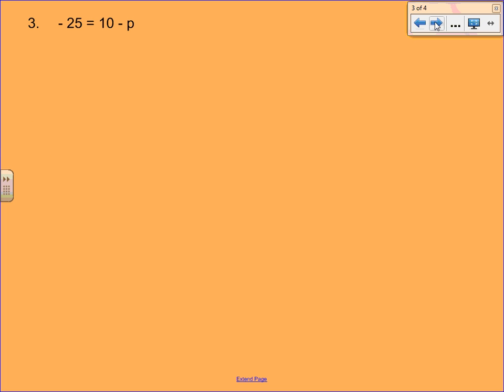Our next example looks a little different because the variable is on the right-hand side. Not a big deal. We start off the same way. We want to look at what is being added or subtracted to the p. And because the 10 is a positive 10, we are technically adding 10. So to undo a positive 10, we need to use a negative 10. So to both sides, you're going to subtract 10.